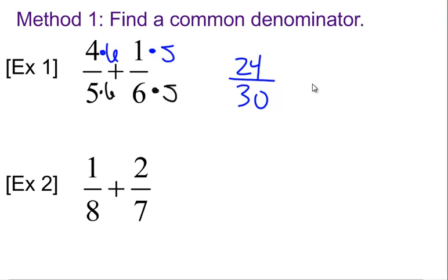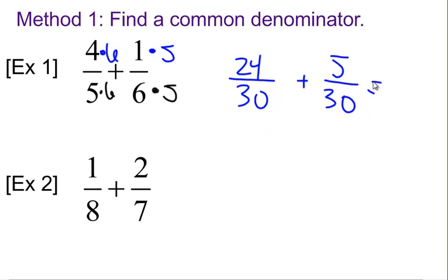And over here, 6 times 5 is 30 for the denominator, and our numerator — 1 times 5 — is going to be 5. So we have 24 thirtieths plus 5 thirtieths. And 24 thirtieths plus 5 thirtieths is 29 thirtieths, because we keep the denominator the same and add the numerators.